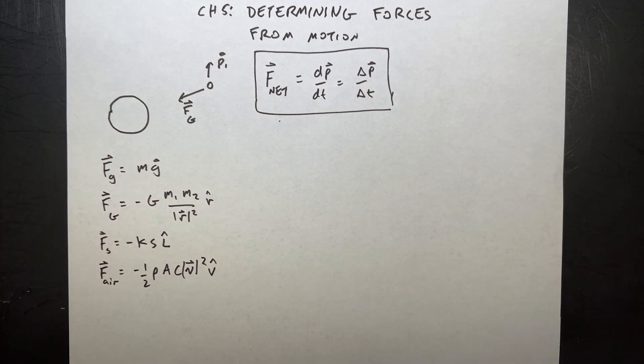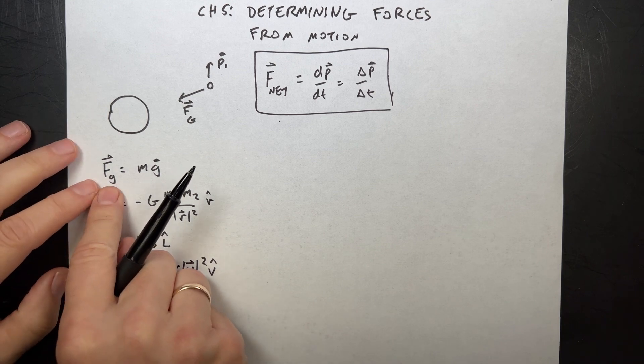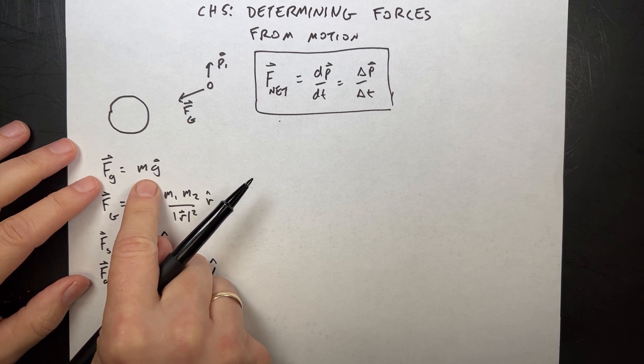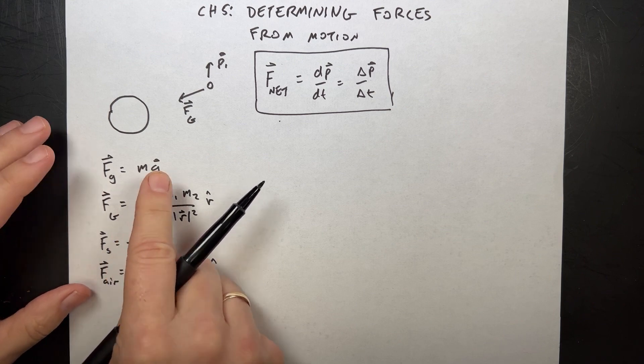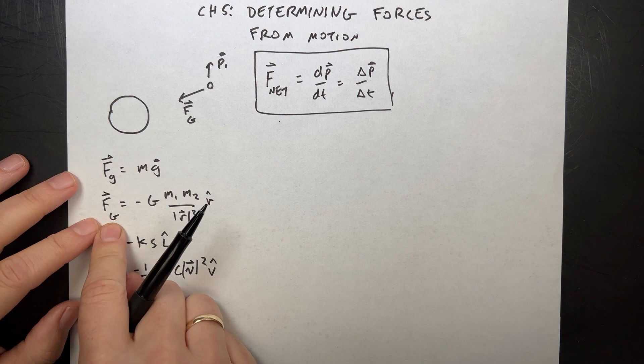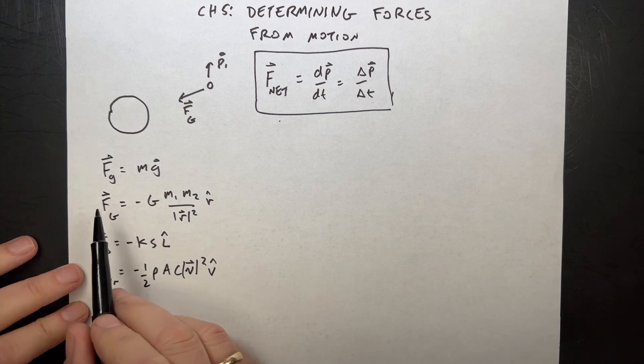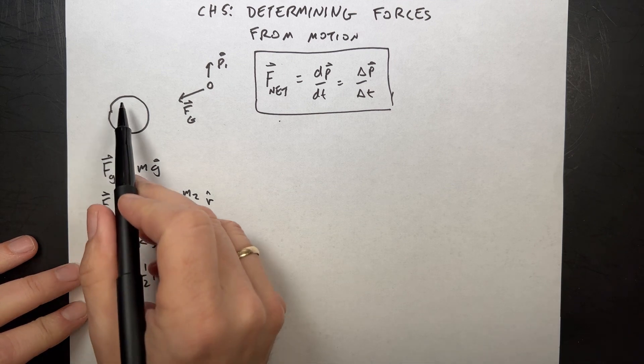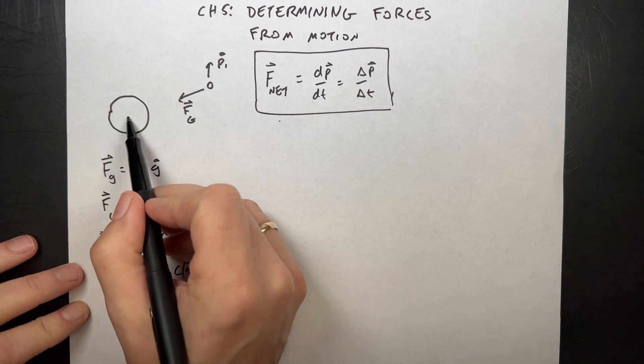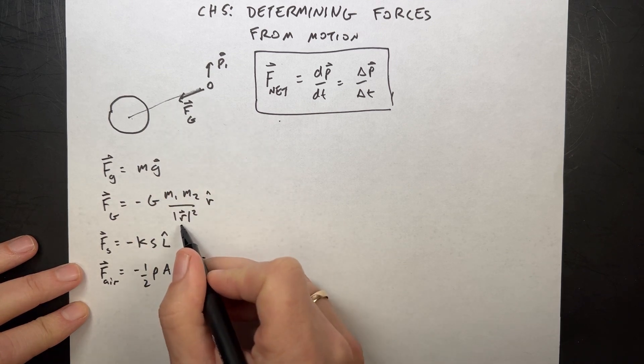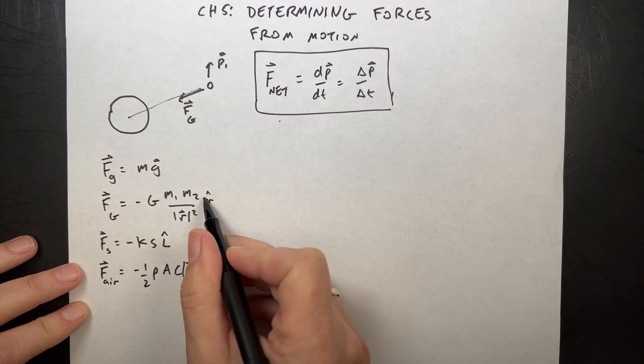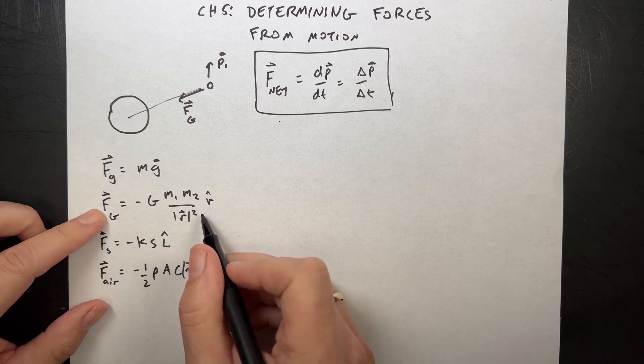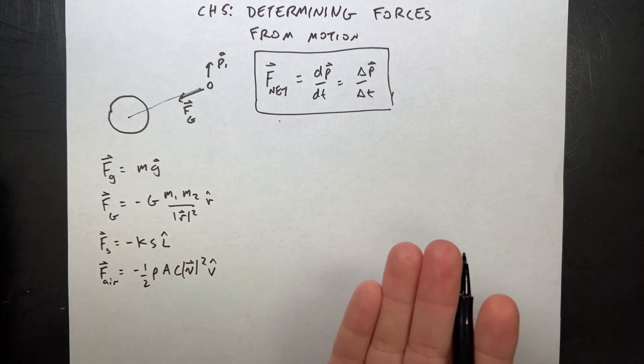But this says that if I know the forces, then I can find the change in momentum. And here are some of the forces that we've used so far. We've looked at the gravitational force on the surface of the earth. This is a constant force, but I can calculate what that is. I just need to know the mass and the gravitational field. I have a more complicated gravitational force due to two interacting objects. So G is a constant, the product of the masses of the two objects, the vector from one to the other, r squared. Then I use a unit vector to make it a vector force.